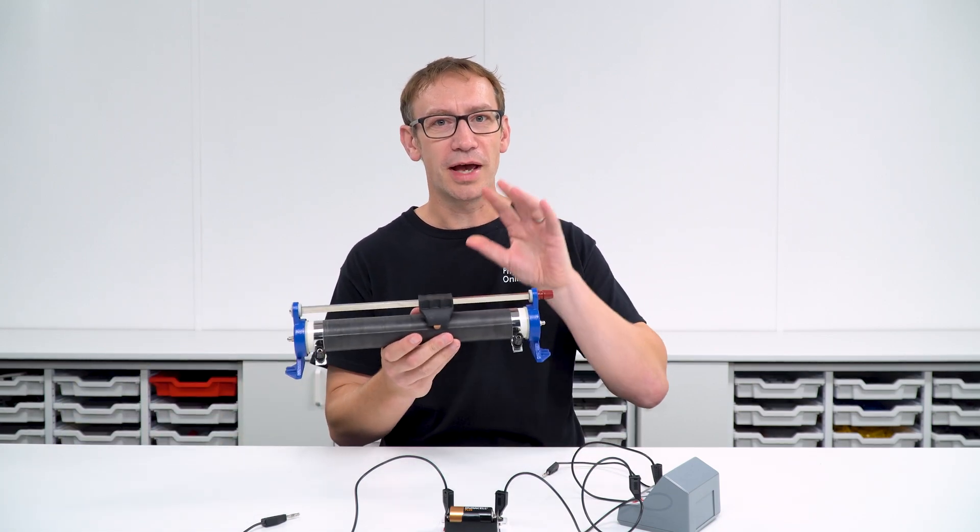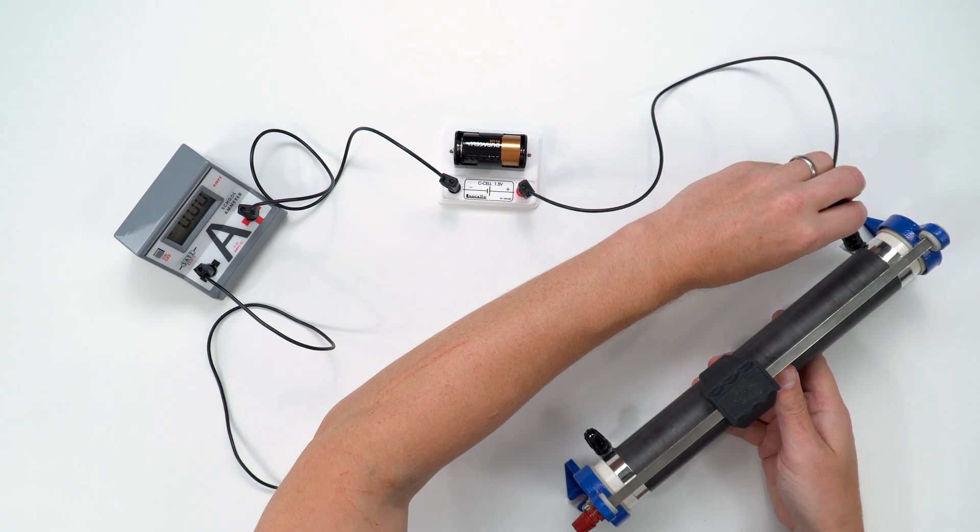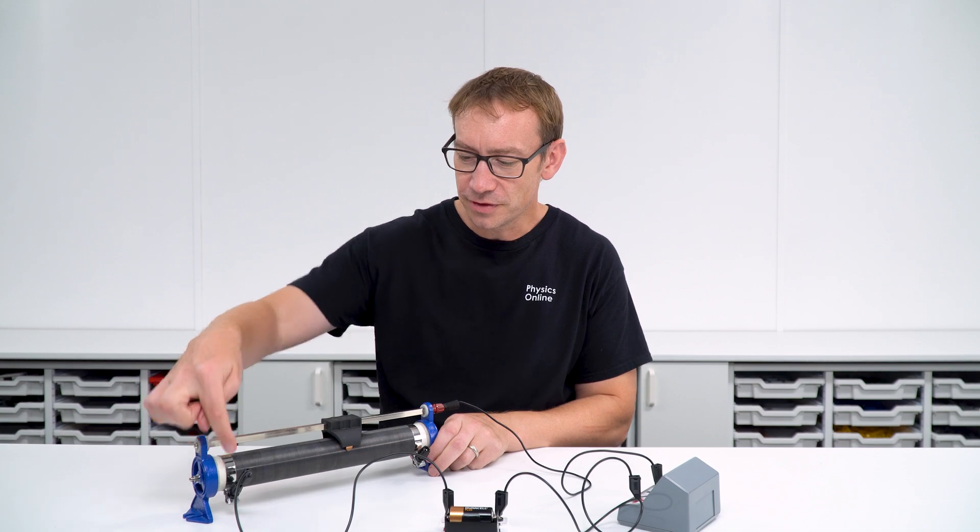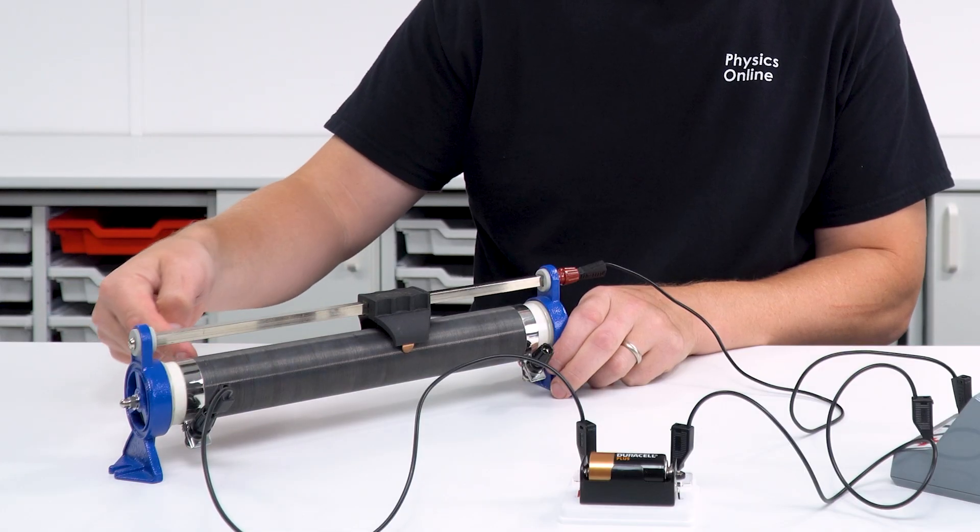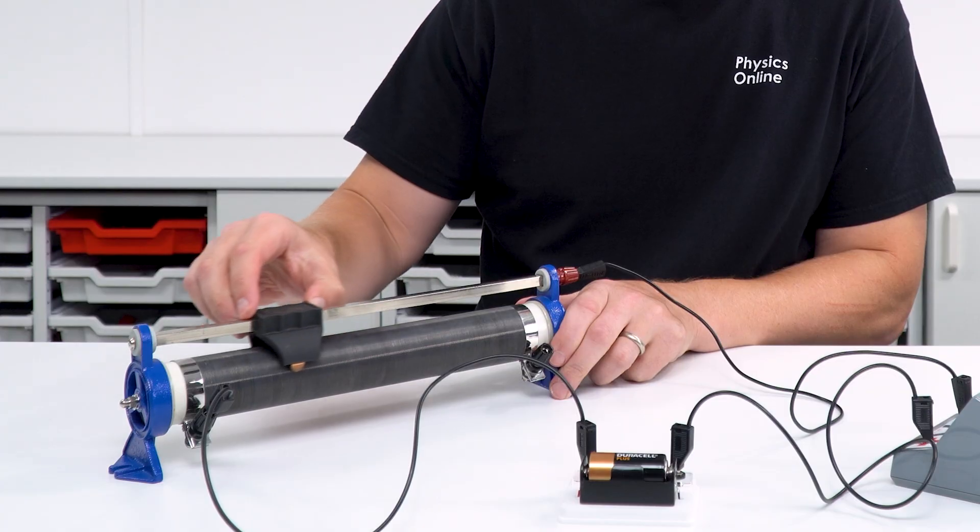Now this can be set up as a variable resistor, and if we put one wire in this end and the other wire up here, what's going to happen is the electricity is going to go in at this point here, it's going to move through that coil, and then we've got a sliding metal contact that we can change its position.